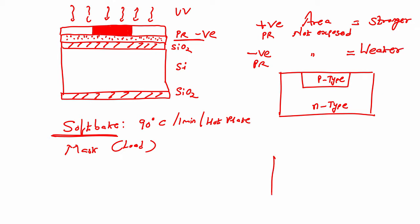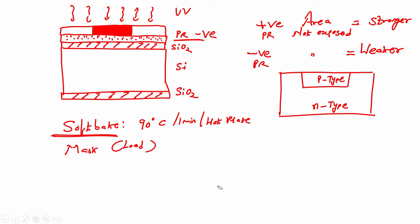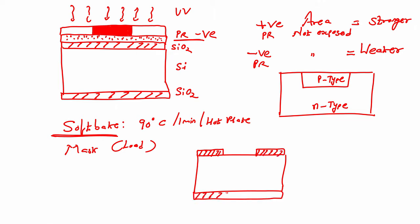What we want is to create a window in SiO₂ like this, so that we can dope p-type material in this area. To obtain that, we have to protect the photoresist on the two side areas, and from the other area we have to etch out the photoresist — we can do that using negative photoresist with a bright field mask.